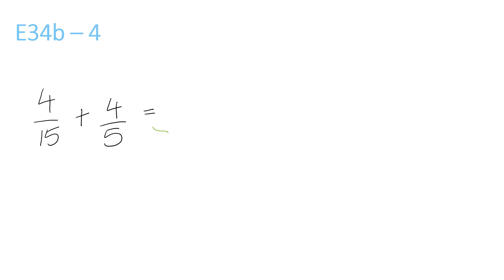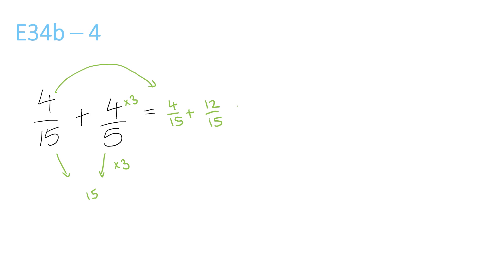This one: 15 and 5 both go into 15. 5 times 3 is 15, so we times the top by 3 as well. But first we have to bring this one over to get 4 over 15, plus 4 times 3 is 12, over 15. This gives us 4 plus 12 is 16 over 15, which equals 15 goes into 16 once, remainder 1, over 15.